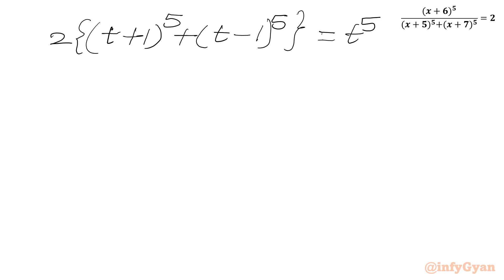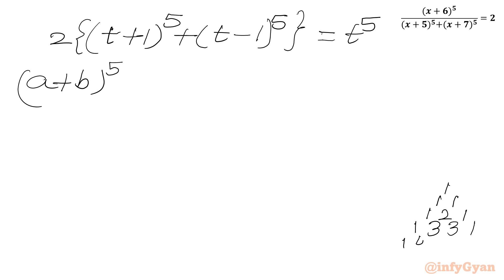Now I will use binomial expansion and Pascal's triangle. I need to write the expansion of (a+b)^5, so we need to know the expansion coefficients. Drawing the Pascal triangle: for power 2 we get 1,2,1; for power 3: 1,3,3,1; for power 4: 1,4,6,4,1; and for the required power 5: 1,5,10,10,5,1.